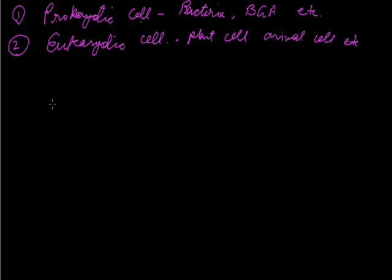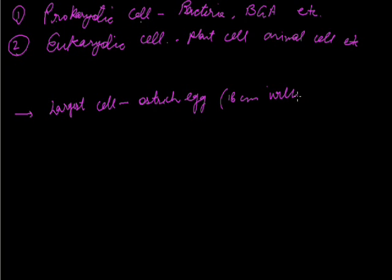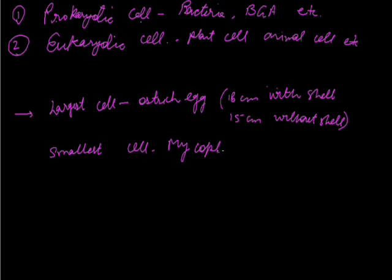Cells have different size and shape. According to size, largest cell is ostrich egg which is 18 cm with shell or 15 cm without shell. The smallest cell is mycoplasma while the longest cell is nerve cell.